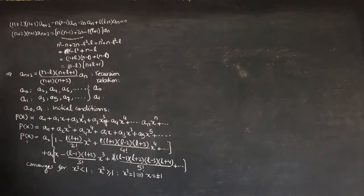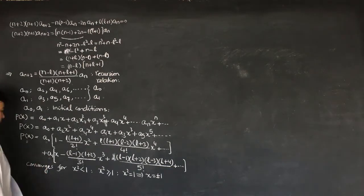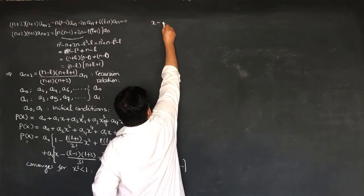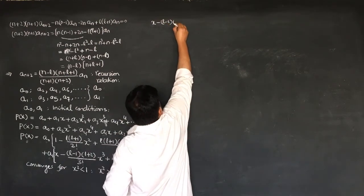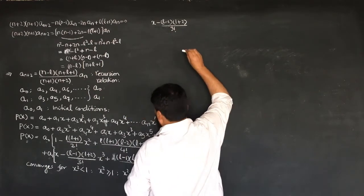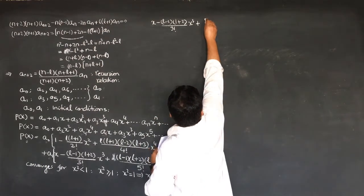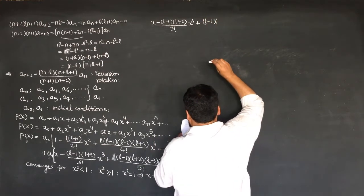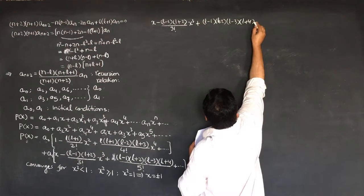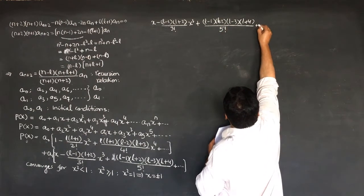Consider the a_1 series specifically. For l equals 0 and x equal to 1, the a_1 series equals: x minus (l-1)(l+2)/3! x^3 plus (l-1)(l+2)(l-3)(l+4)/5! x^5 plus other terms. Substituting l=0 and x=1, this becomes 1 plus 1/3 plus 1/5 and so on.